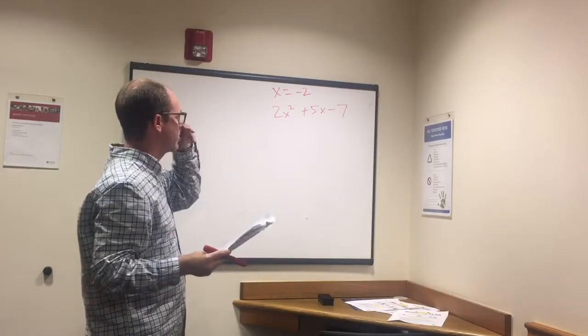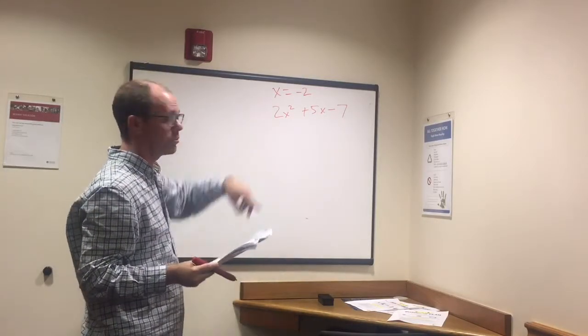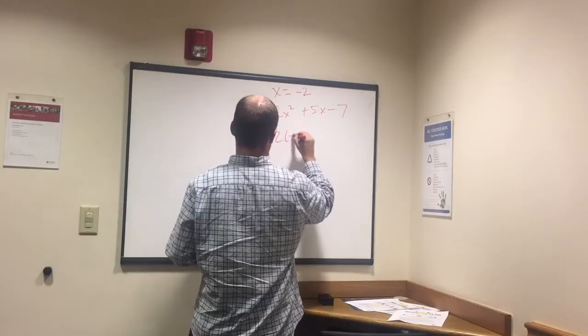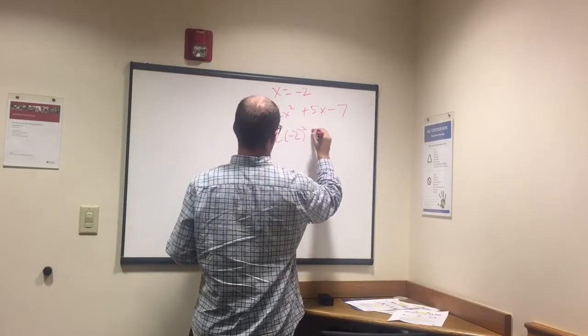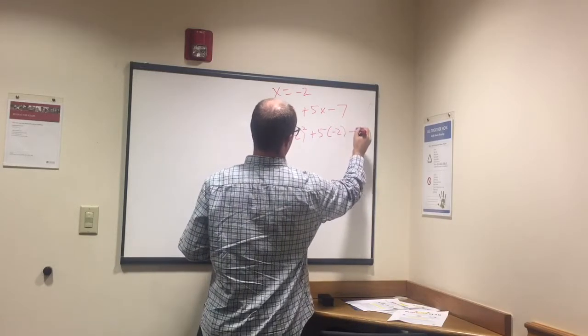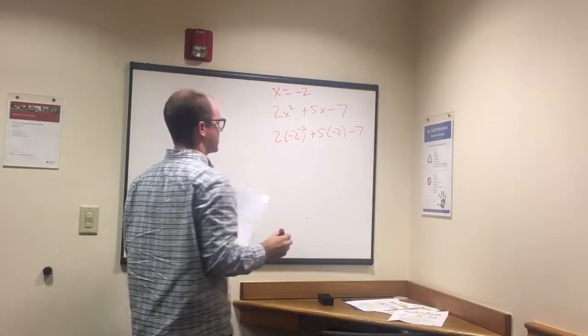Okay, so all we're really going to do here is plug in that negative 2 for x. So 2 times negative 2 squared plus 5 times negative 2 minus 7.